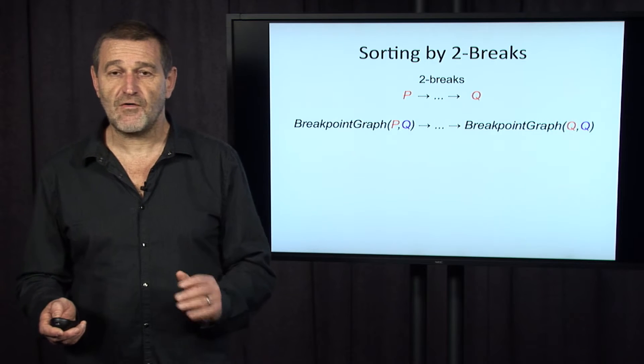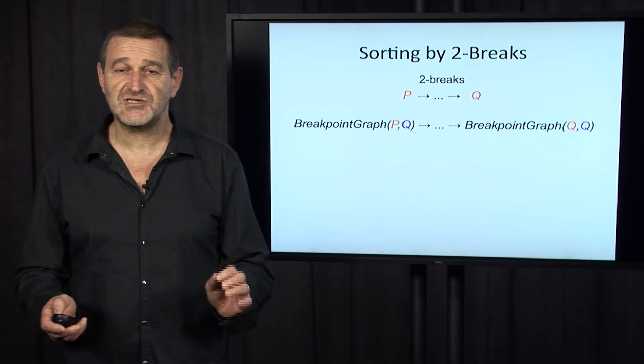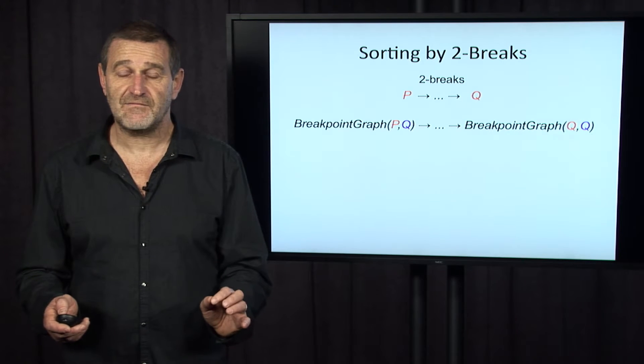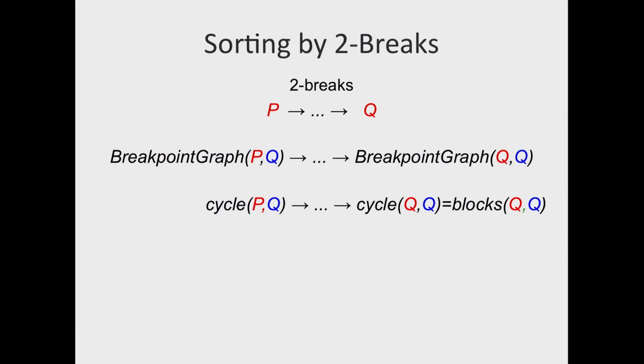the breakpoint graph of P and Q changes into the breakpoint graph of Q with itself, which means that the cycle number of P and Q is changing into the cycle number of Q with itself, which in turn is simply the number of blocks in Q.